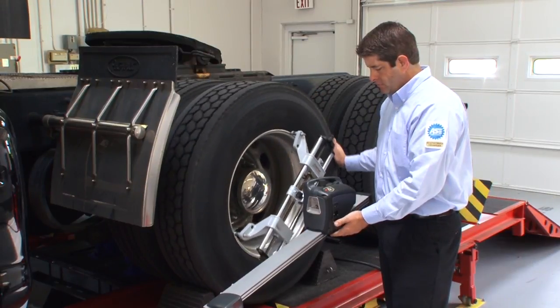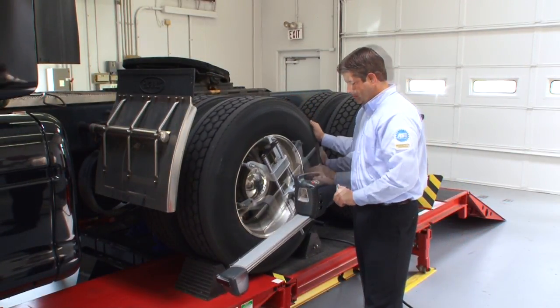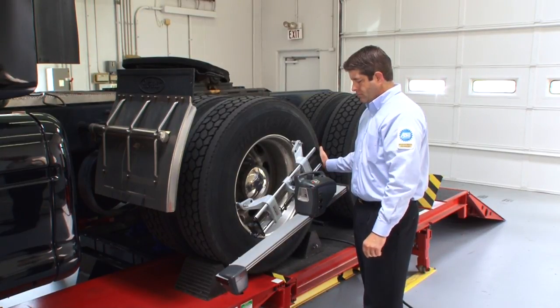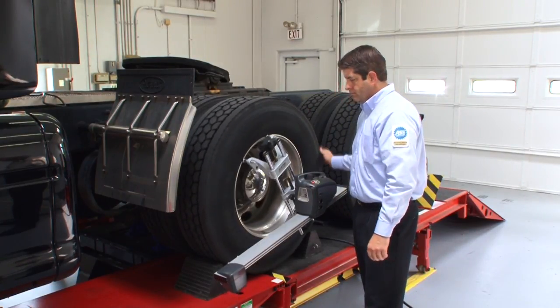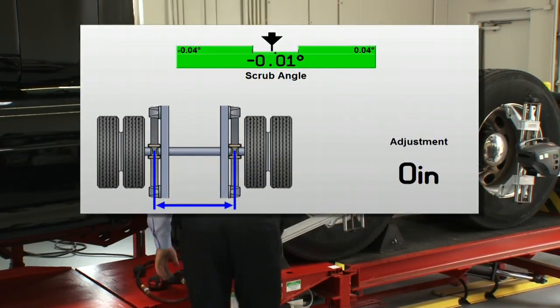To finish the alignment, the front sensors are moved back to the forward drive axle and compensated. The correction is made, and the alignment is complete.